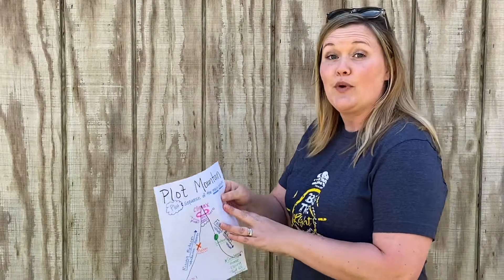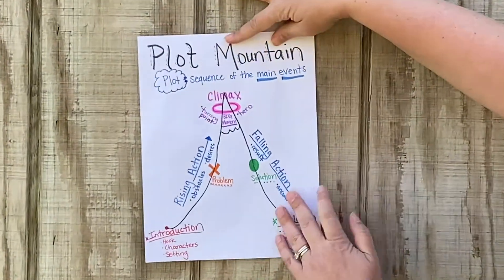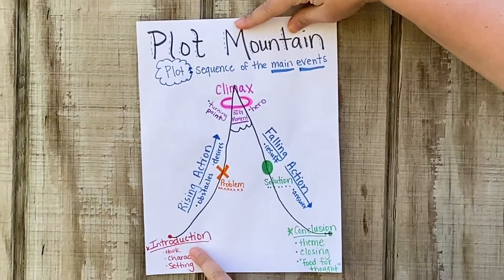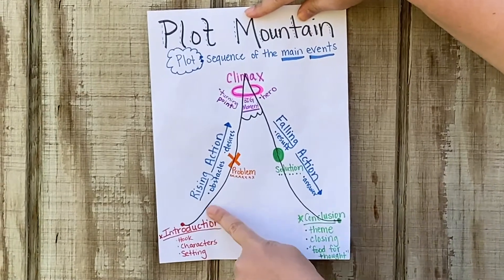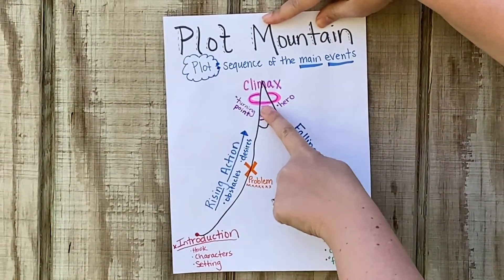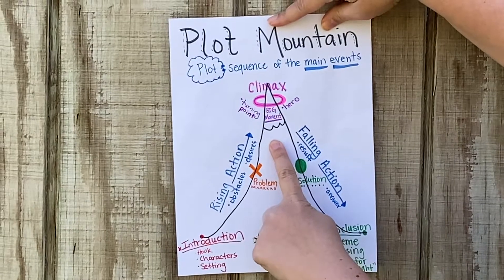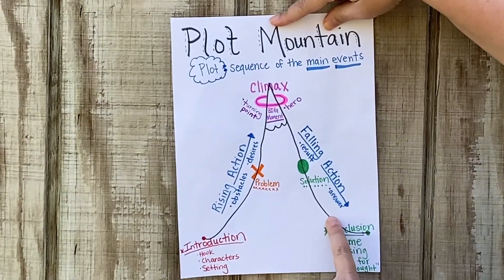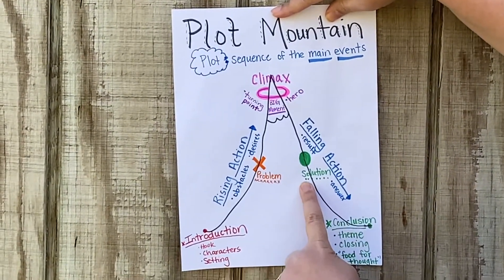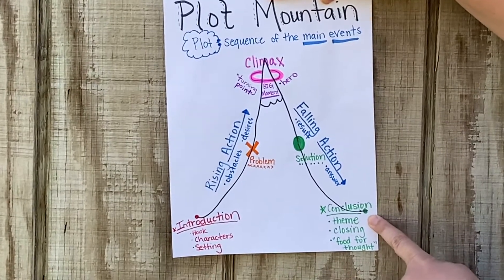Today's challenge, while you're reading, I want you to think about the plot of the story. Remember Plot Mountain? Plot Mountain begins with the introduction — your characters and setting — rising action, that big problem, climax, your big moment and turning point, falling action, your solution, and then closing everything up with your conclusion and theme.